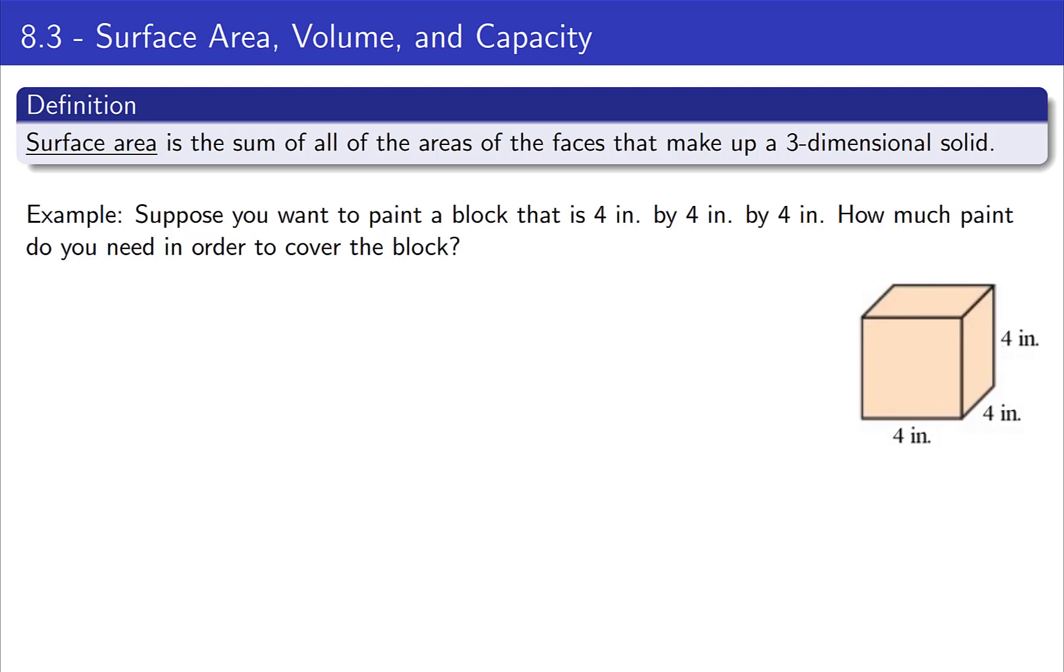In this lesson, we're going to talk about surface area, volume, and capacity. Surface area is sort of a hybrid between two dimensions and three dimensions, in that it is an area of all the outside of a three-dimensional object.